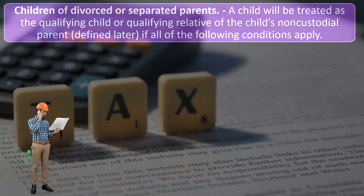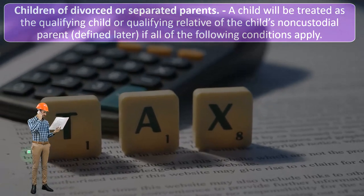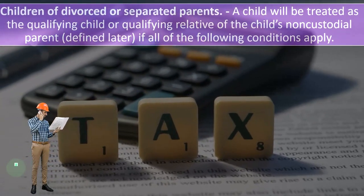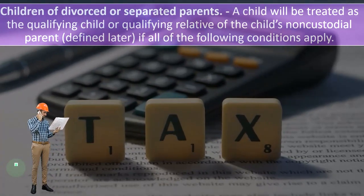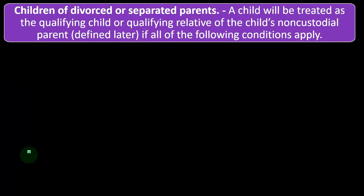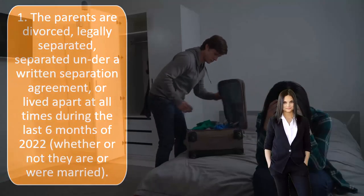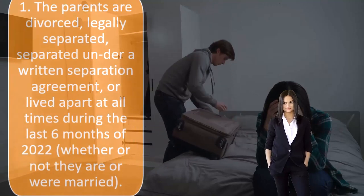You'd like to get it laid out so everybody knows what's happening from day one, so there's not manipulative stuff going on later — though that's difficult to do oftentimes. In the process of a separation or custody arrangement, they do this joint custody. So again: a child will be treated as a qualifying child or qualifying relative of the child's non-custodial parent if all the following conditions apply. Condition one: the parents are divorced, legally separated, separated under a written separation agreement, or lived apart at all times during the last six months of 2022, whether or not they were married.